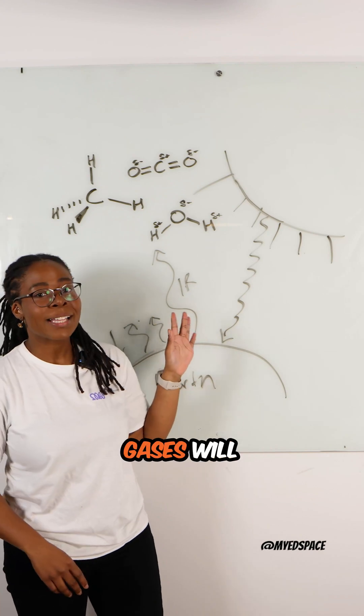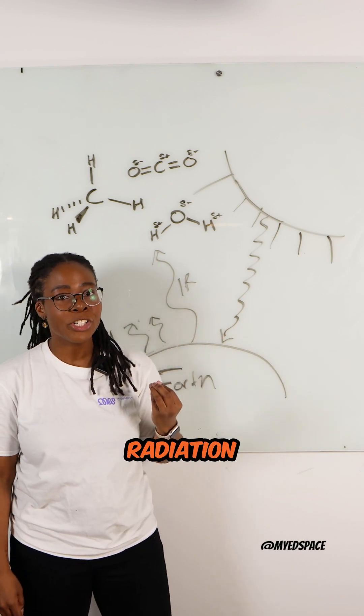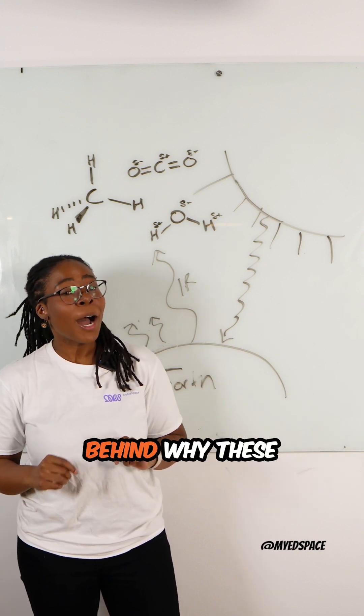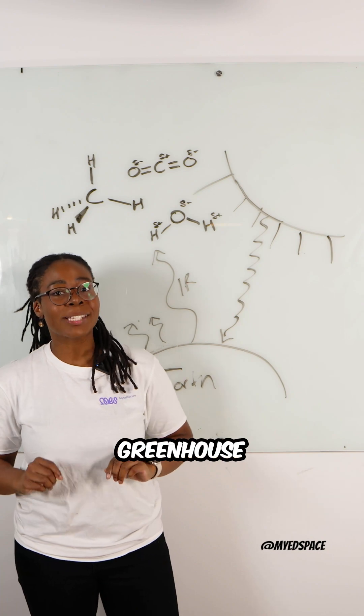Brooke has explained that greenhouse gases absorb infrared radiation and re-emit it to the Earth's surface. Let's look at the chemistry behind why these are greenhouse gases.